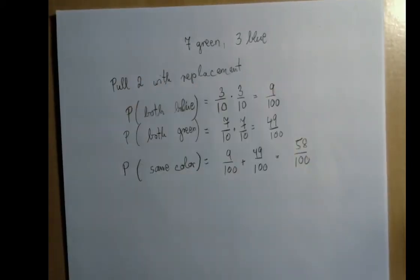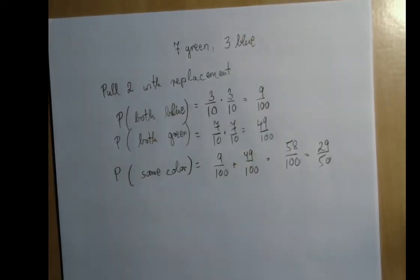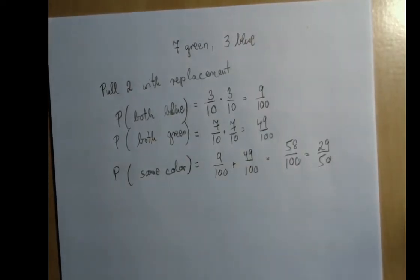This is the first time we can simplify, right? They're both even, so the final probability is 29 out of 50.